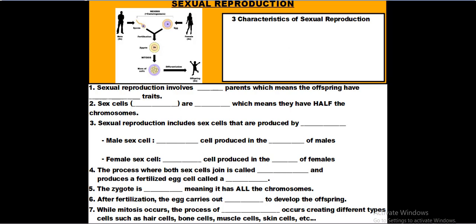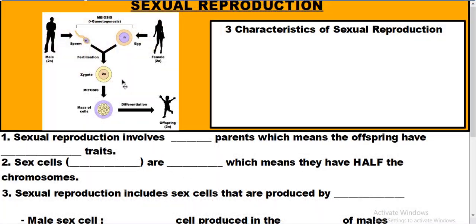Let's take a closer look at the diagram in the upper left corner. We have two adults — a male and a female — and what are called sex cells or gametes. We have the male gamete and the female gamete. Where these two come together we have fertilization, producing the zygote. After the zygote appears, mitosis begins, this one cell becomes a ball of many cells, and through differentiation that ball of cells becomes an offspring.